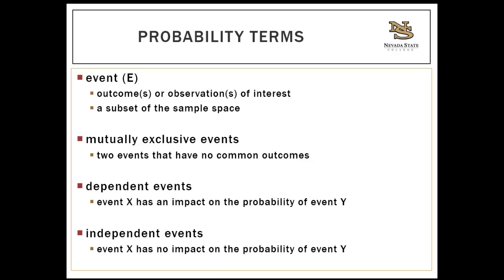Another example of independent events — this one's a little trickier. If you ask what's the probability that someone will be in good condition or walk in, a patient could do either or both and still be counted as an outcome of interest, so those would be considered independent. And back to the dice example: the sum of the first pair of dice is not related to the sum of the second pair of dice — those are independent events.